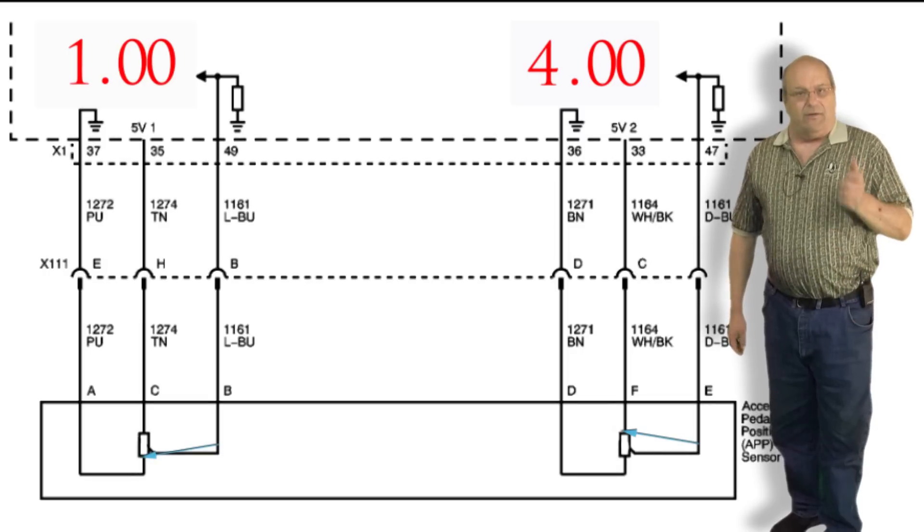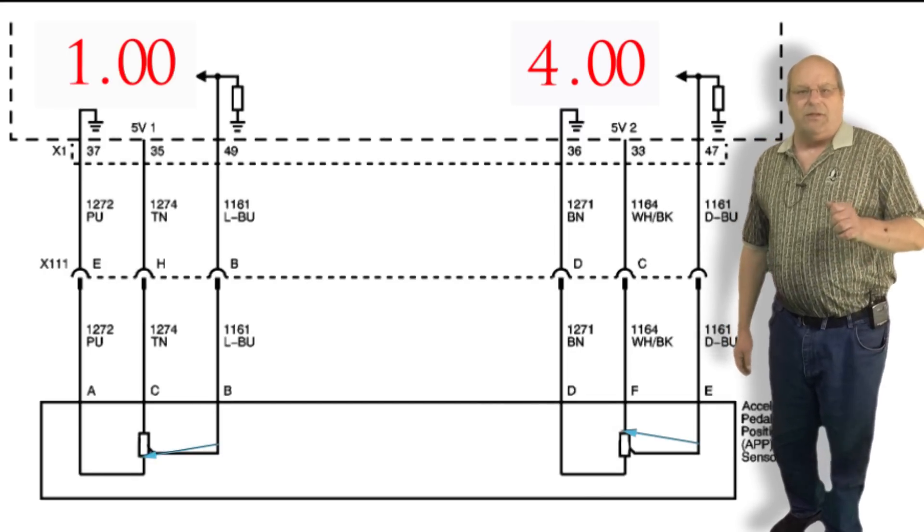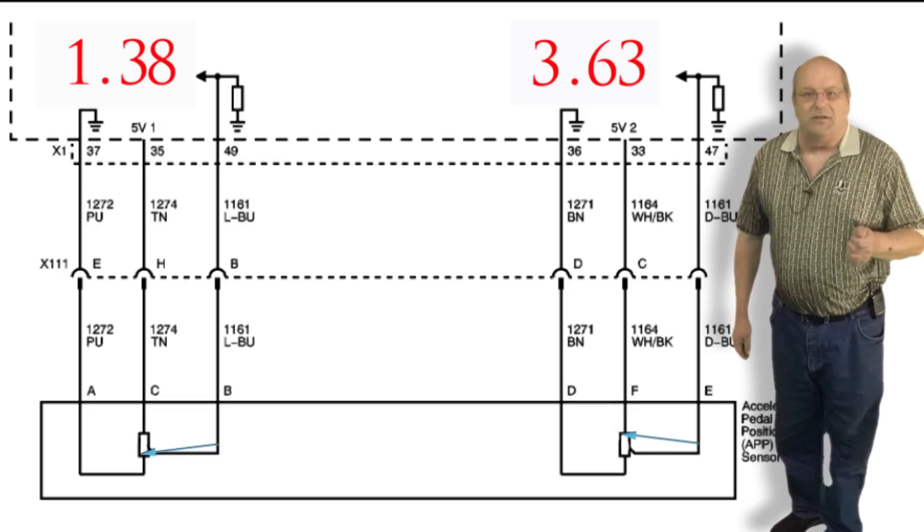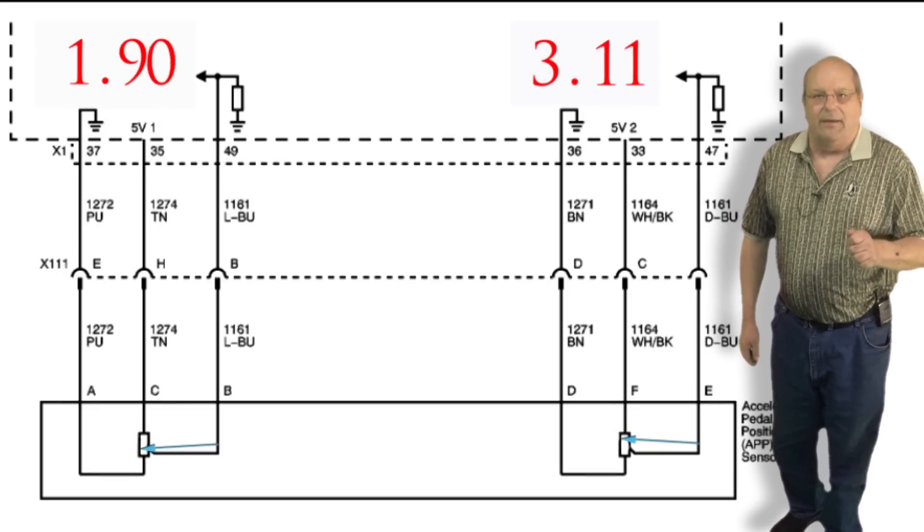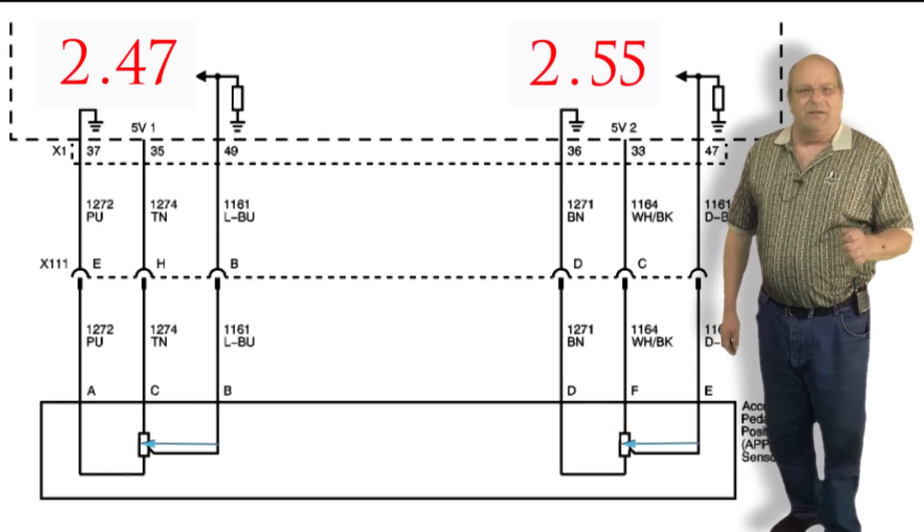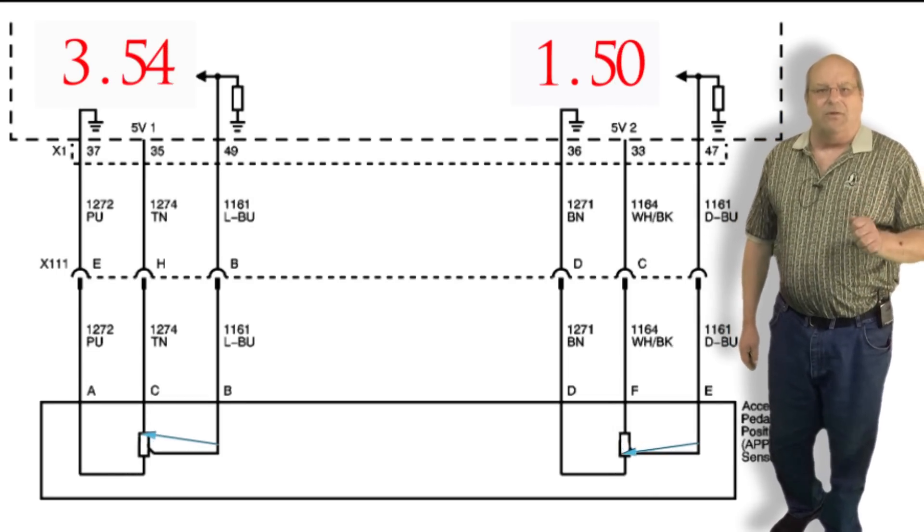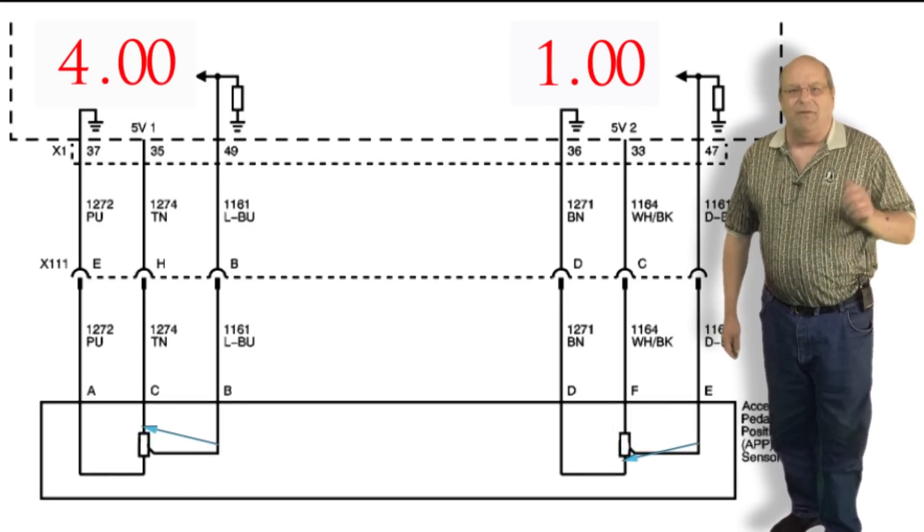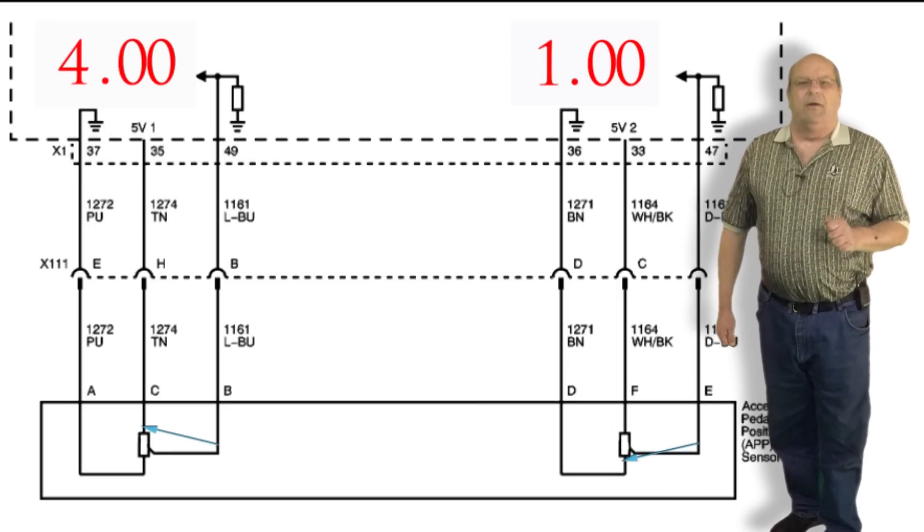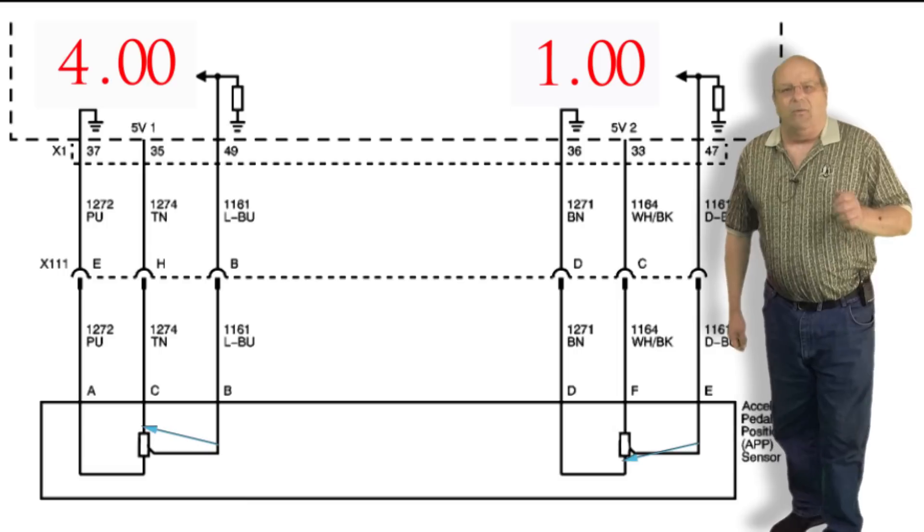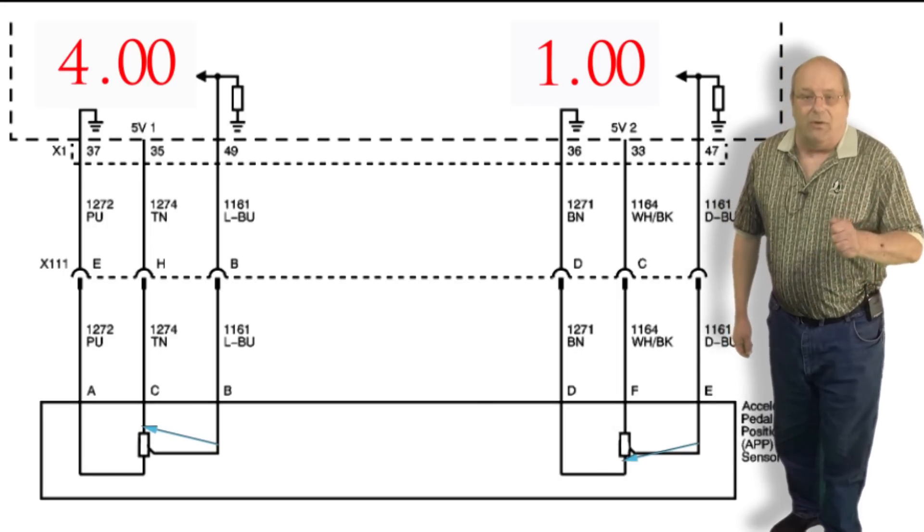As the accelerator pedal is pressed to the floor, the voltages on one of the sensors goes from high to low and the other sensor voltage goes from low to high. I know my voltage meters are not perfect, but on the vehicle the total of these two voltages should always total 5 volts. If the voltage totals stray from the 5 volt total, the power loss light will illuminate and the system will go into limp mode.